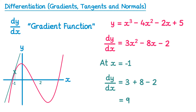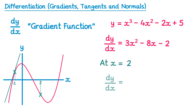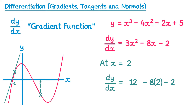Let's try another point: x equals 2. We substitute x equals 2 into the gradient function: dy by dx equals 3 lots of 2 squared, take away 8 lots of 2, take away 2. That gives 12 minus 16 minus 2, which equals negative 6. So the gradient of the curve and of the tangent at this point is negative 6.